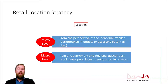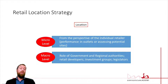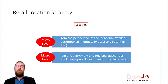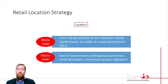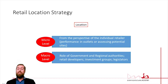Next in our location strategy, we look at two levels. The micro level is from the perspective of the individual retailer — where will we place our outlet, and where will we expect customers to come to us, or where will we go to the customer? The macro level involves the role of government, regional authorities, developers, investment groups, and legislators.